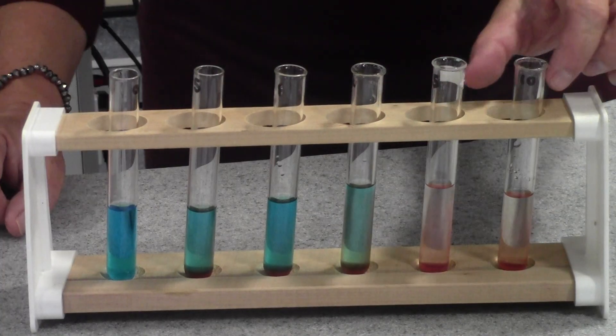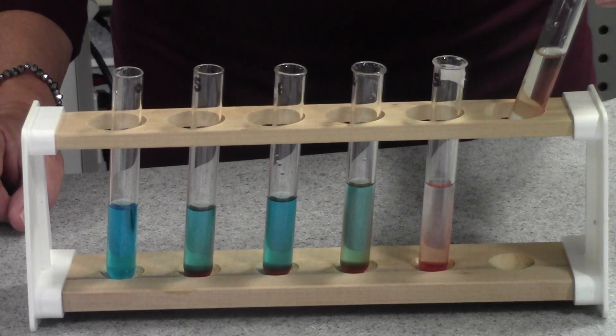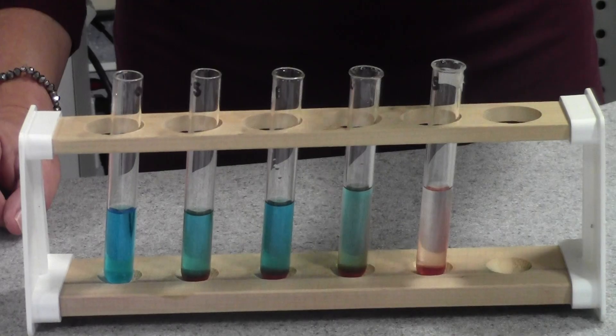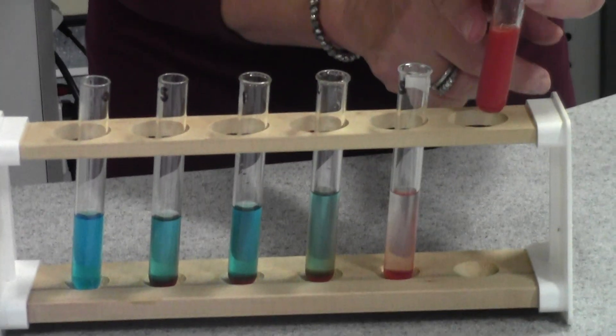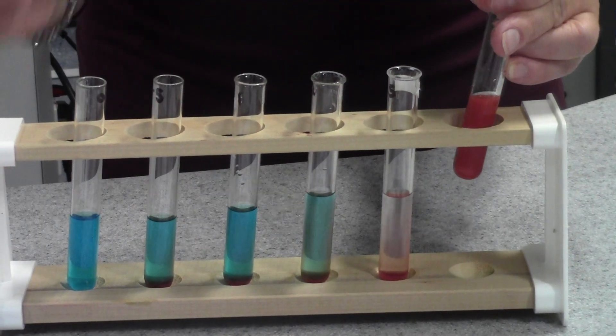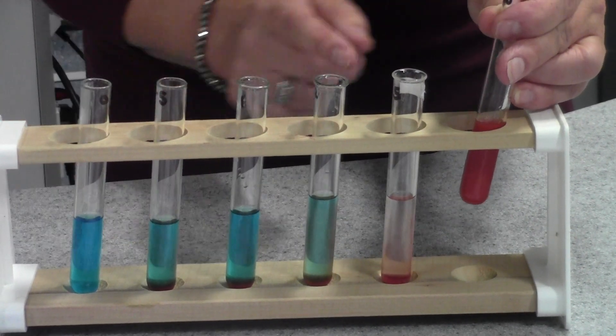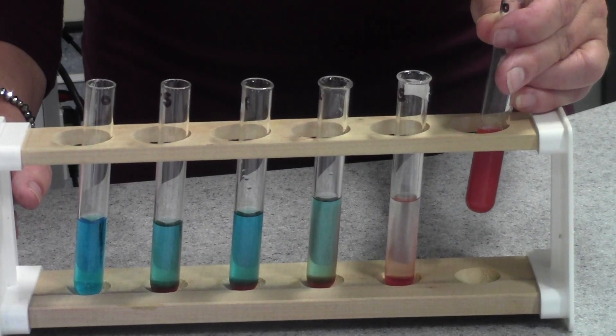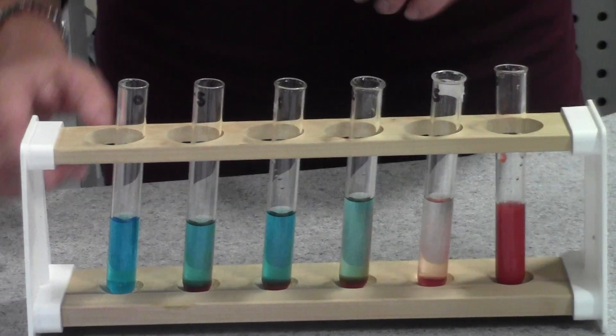Whereas at the other end of the scale this was the 10% glucose solution. I'm just going to give it a little shake actually because it's settled out and you can see in there we've got quite a lot of brick red precipitate because a lot of the Benedict's reagent has reacted with the reducing sugar that was in that sample there.